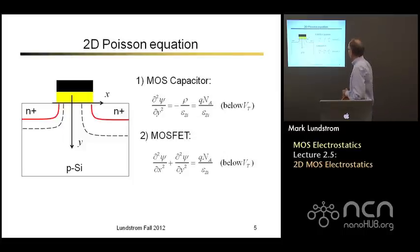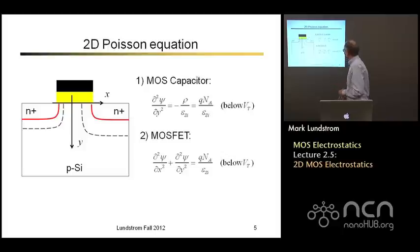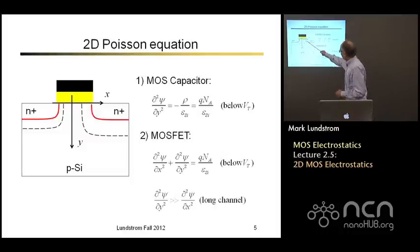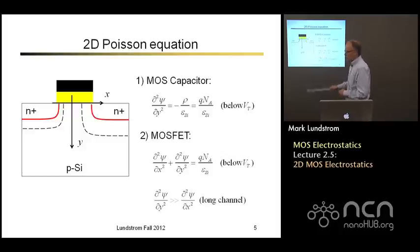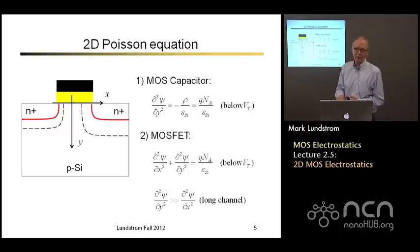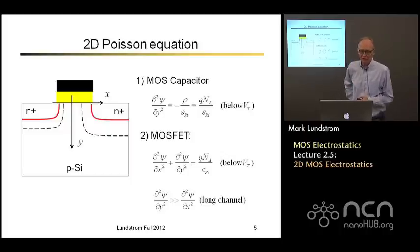In a real MOSFET, we will have both terms: del squared x and del squared y. Below threshold, the only charge is the depleted charge in the channel. The assumption that we make in a long channel device is that the curvature of the potential in the direction normal to the channel is much bigger than the curvature along the channel, and therefore the 1D solution still continues to hold. It is precisely that assumption that begins to break down when the channel lengths get shorter and shorter, and that's what we're talking about in this lecture.